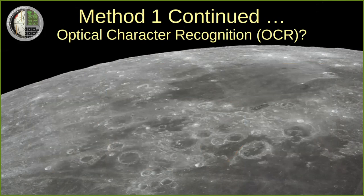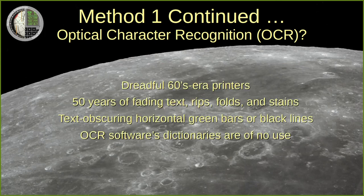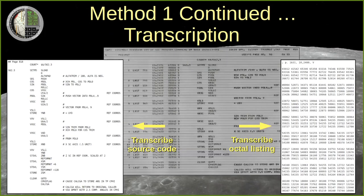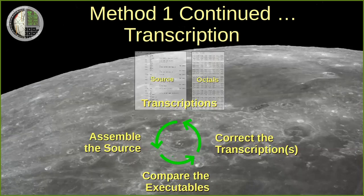Do we use optical character recognition software to turn the scans into machine-readable source code files? No, we do not. My slogan: OCR is no CR. OCR works best when you start with hard copy having very good print quality, and the printouts we work with seldom have that. Perhaps the worst thing is that modern OCR software relies heavily on dictionaries specific to the languages being recognized — it's like autocorrect on your phone, but for the wrong language. Instead, a team of volunteers manually transcribes the source code and separately transcribes the octal listing of the executable. We then process the transcribed source code using our modern assembler and compare the executable produced to the transcribed octal listing. If there are mismatches, we correct the transcription, and we just keep doing that until the executable is perfect.